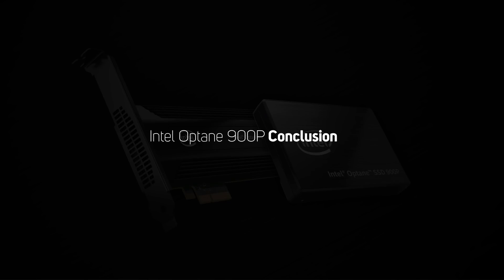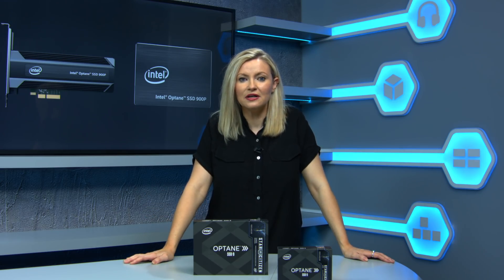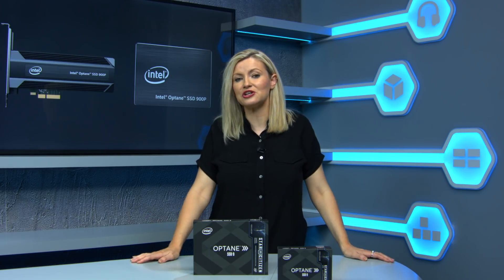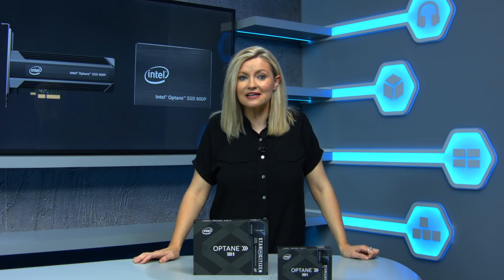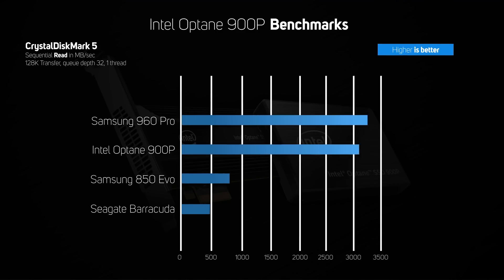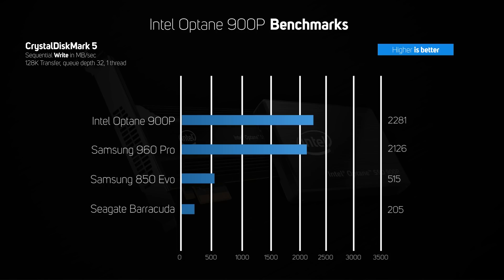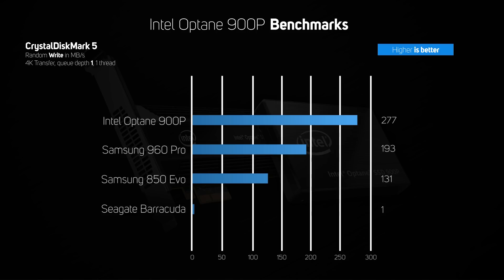It's great to see SSDs using 3D Crosspoint finally making their way onto the market, as the hype around this new memory technology was enormous a couple of years ago. The benchmarks for the new Intel Optane 900p SSD paint an interesting picture, and one that needs to be carefully evaluated. In commonly used synthetic tests with huge queue depths, the 900p is faster at writing but slower at reading than the market-leading high-end NAND SSD, the Samsung 960 Pro. However, at the lower queue depths that most desktop applications use, the 900p is much faster than the 960 Pro, so it really depends on what you use your PC for.